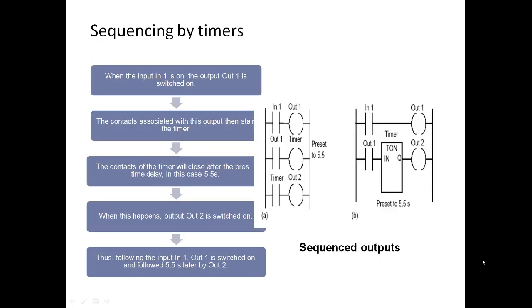Sequencing by timers. When input 1 is on, output 1 is switched on. The contacts associated with the output can be stated in the timer. The contacts of timer will close after preset time delay of 5.5 seconds. When this happens, output 2 is switched on. Thus following input 1, output 1 is switched on and followed 5.5 seconds later by output 2. This is called a sequence of outputs.